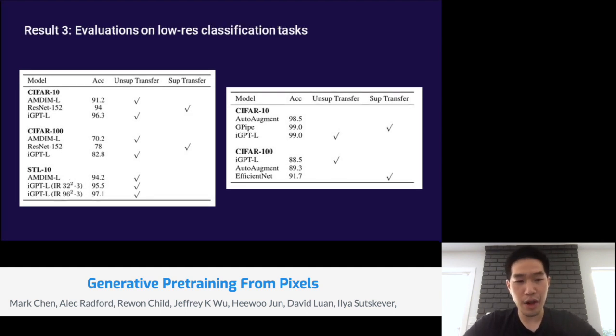Our model is also similarly strong in the fine tuning setting. We achieve 99% on CIFAR-10, which outperforms AutoAugment, the best supervised model trained end-to-end on CIFAR-10, even though we don't use sophisticated data augmentation techniques. In fact, 99% ties GPipe, which is the best model which actually pre-trains using ImageNet labels.